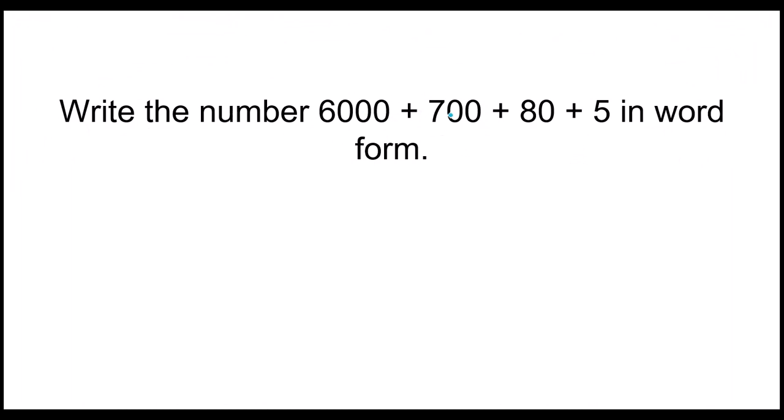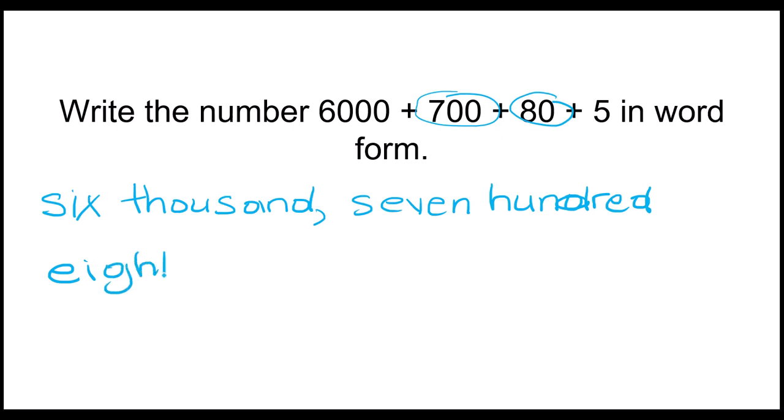Write the number 6,000 plus 700 plus 80 plus 5 in word form. So now 6,000, I would write the word six first, and then thousand, T-H-O-U-S-A-N-D. The next digit is 700, so I write comma, seven hundred. And then 80, E-I-G-H-T-Y. And then last digit is 5, so dash F-I-V-E. 6,785. You did it.